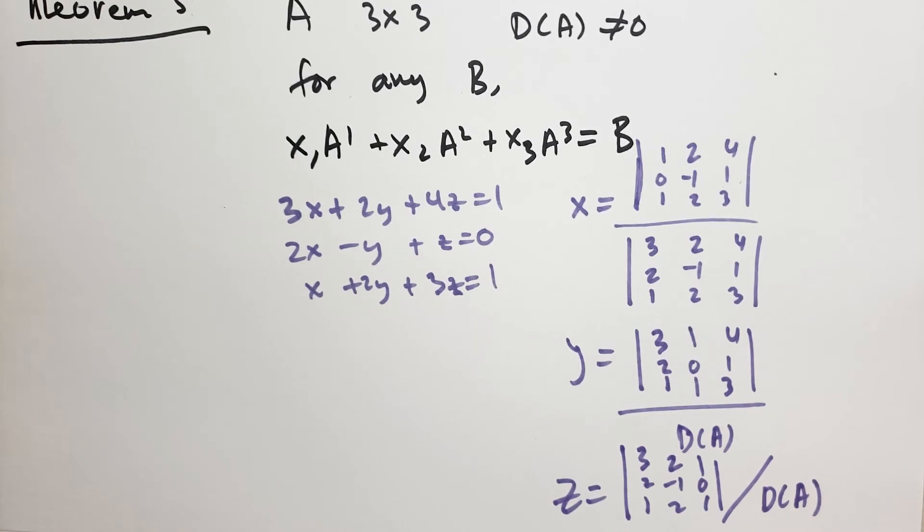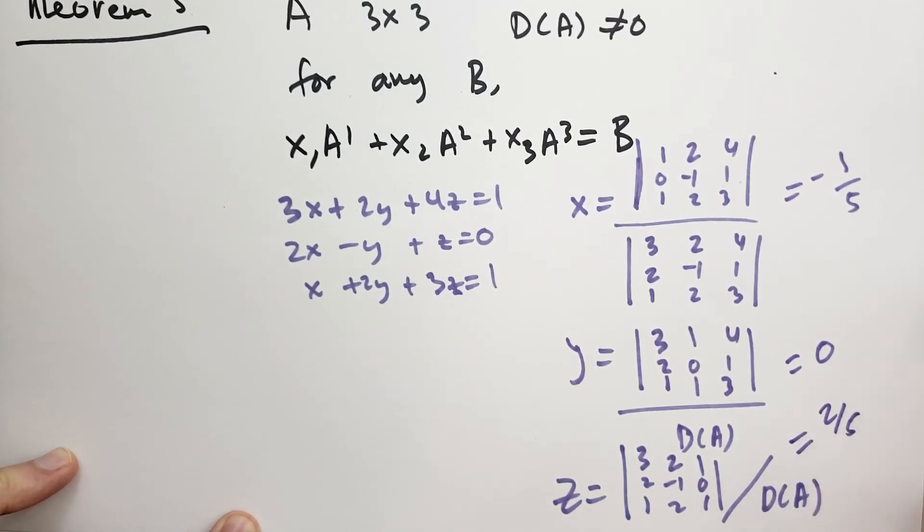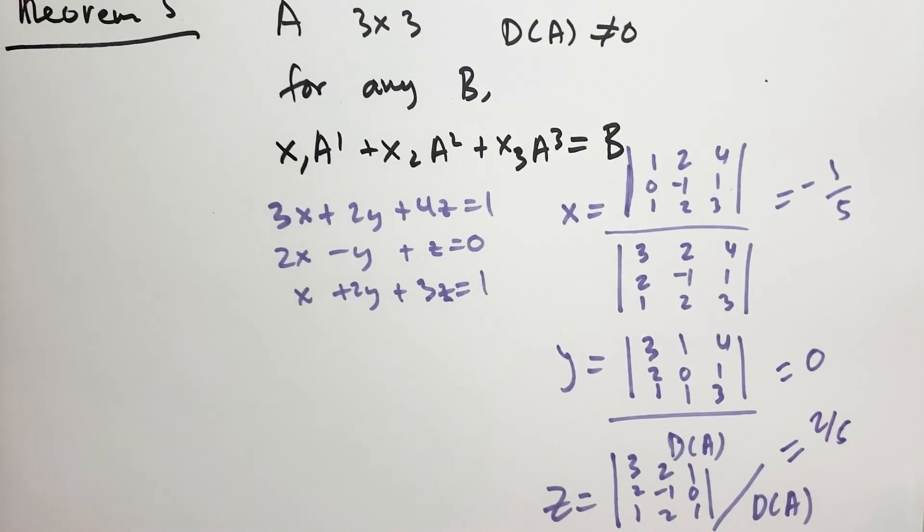If you were to actually solve them, you should get that X equals minus 1 over 5, Y equals 0, and Z is 2 fifths. That's the answers you should get.